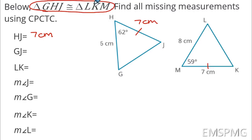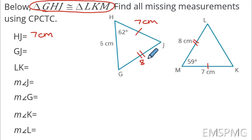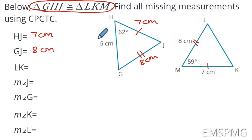Looking at our example, we see that the triangles are congruent. We need to find all missing measurements using CPCTC. The first thing I want to point out is this congruence statement — it tells us all the answers we need to know. Angle GHJ has to go in the same order as triangle LKM. Using that information, we're going to look at our diagrams and figure out which side lengths and angle measures are going to match up.